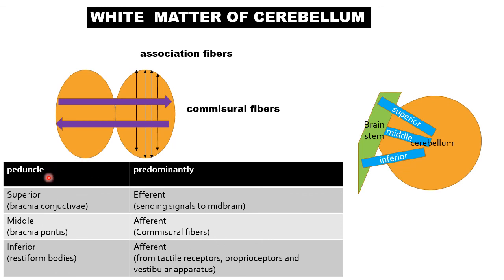The superior cerebellar peduncle, also called brachium conjunctivum, predominantly carries efferent fibers sending signals to the midbrain. The middle cerebellar peduncle, called brachium pontis, is afferent in nature and mainly carries commissural fibers connecting both hemispheres. The inferior cerebellar peduncle, called the restiform body, is also afferent — receiving signals from tactile proprioceptors and the vestibular apparatus — and sends signals to both the brainstem and the cerebellum.